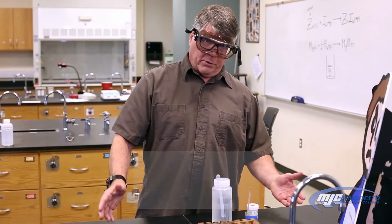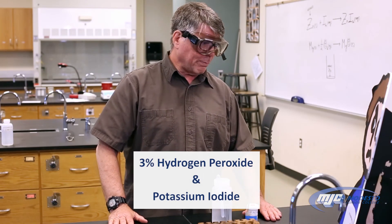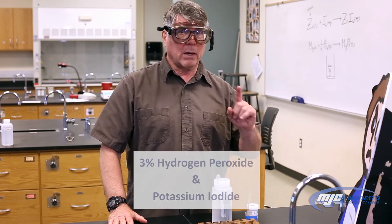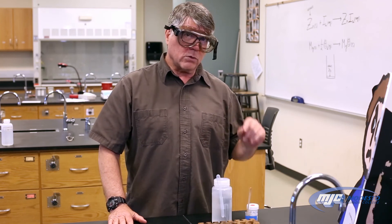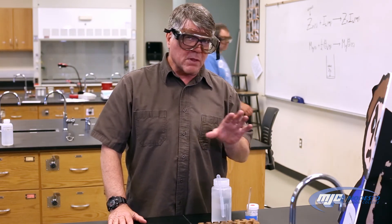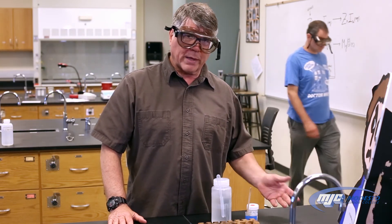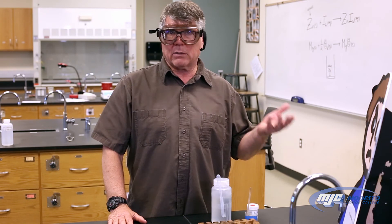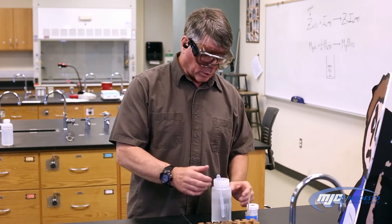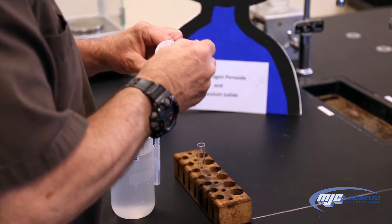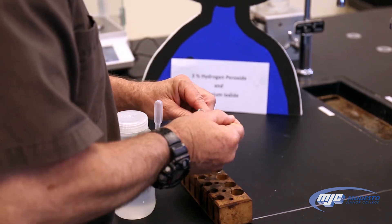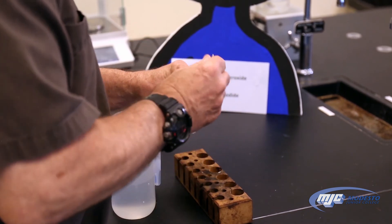This is the reaction, if any, between 3% hydrogen peroxide and potassium iodide. One quick word about this: you will see a color in the solution, but that is not what we're looking for — that's just what potassium iodide looks like whenever it's in any solution or water.